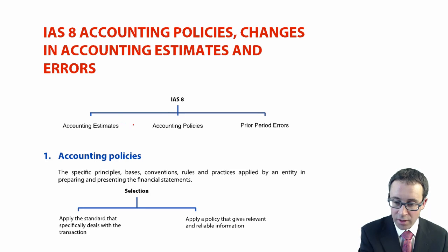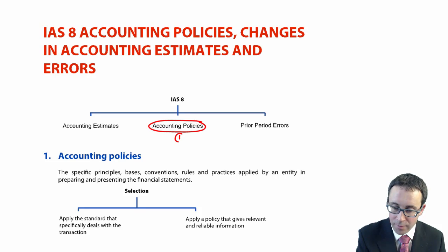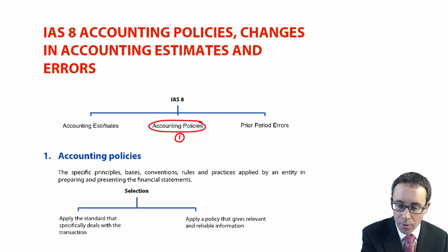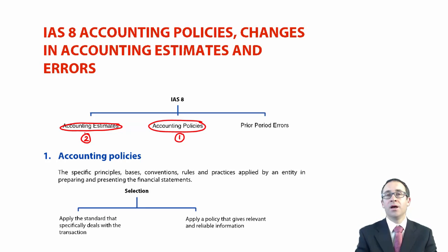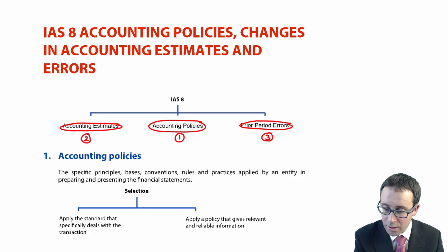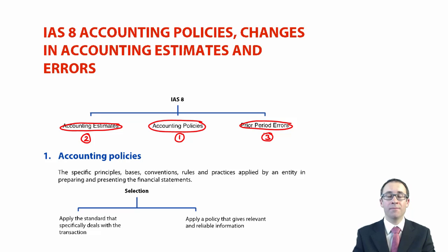First, it looks at your accounting policy — all of these accounting rules that we have, and how do we know that we are applying the correct accounting rules to the correct transaction. We also look at your accounting estimate — what constitutes an accounting estimate. Then we combine policy and estimate with what happens if we change the policy or the estimates. Third and finally, we look at what happens if you have made an error within the financial statements — how do we subsequently correct that accounting error with numbers having been incorrectly reported in previous accounting periods.